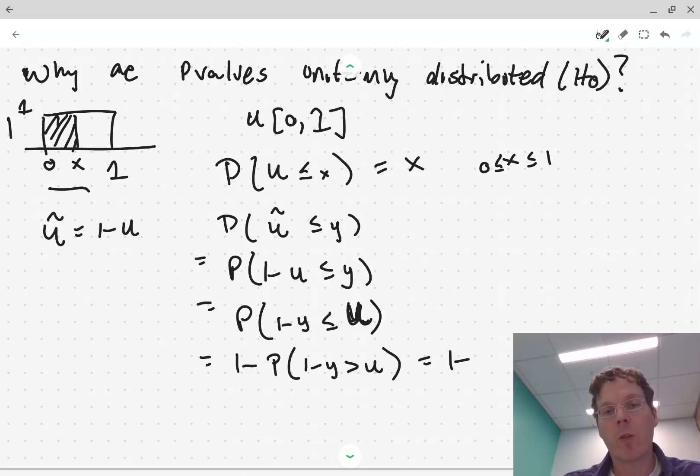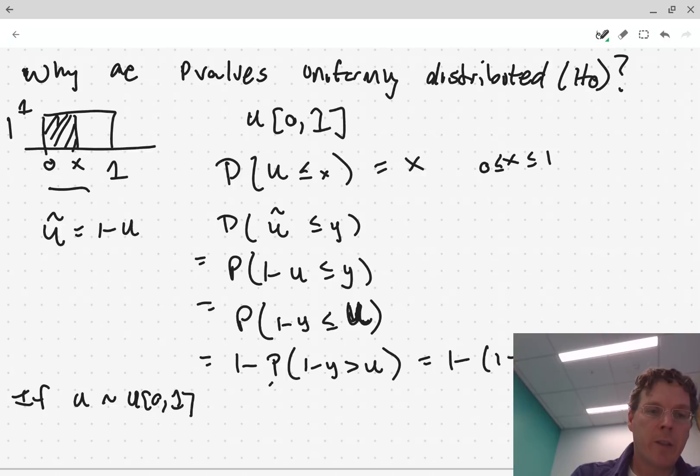the less than or equal to, or greater than or equal to, or the less than or equal to, or less, strictly less than. It doesn't change anything for continuous density. So this is just evaluating this quantity up here. So it's 1 minus 1 minus Y equal to Y. So the conclusion is if U is uniform 0, 1, then 1 minus U is also uniform 0, 1.